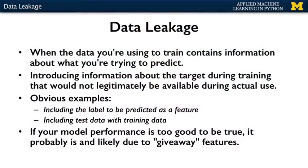Maybe the simplest example of data leakage would be if we included the true label of a data instance as a feature in the model. The model would learn the equivalent of: if this object is labeled as an apple, predict it's an apple. Another clear example is having test data accidentally included in the training data, which leads to overfitting. However, data leakage can happen for many other reasons too, often in ways that are quite subtle and hard to detect.